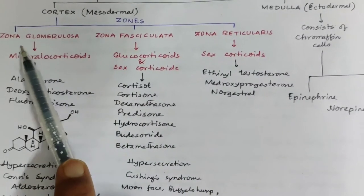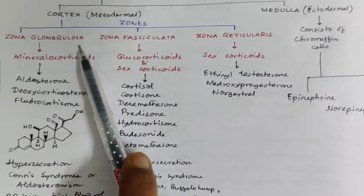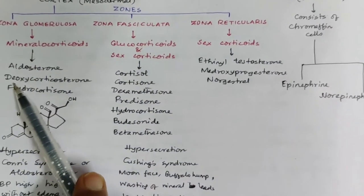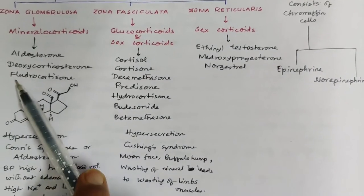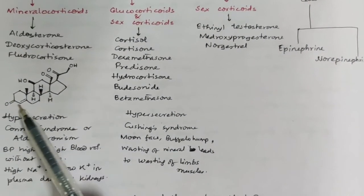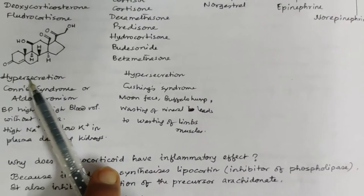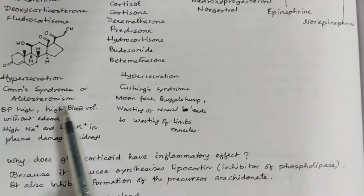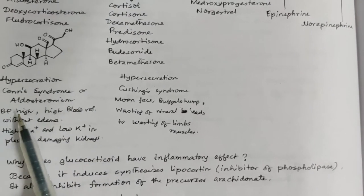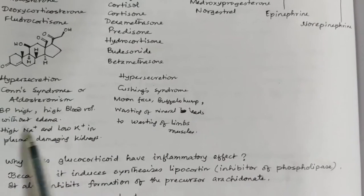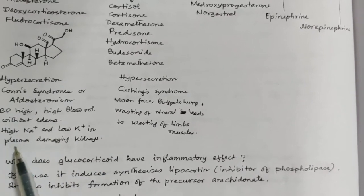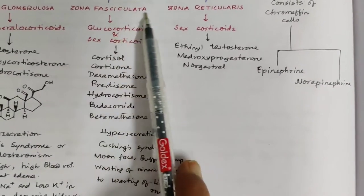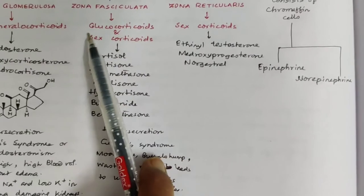The cortex contains three layers. The first layer is zona glomerulosa, which secretes mineralocorticoids like aldosterone, deoxycorticosterone, and fludrocortisone. Hypersecretion of aldosterone causes Conn's syndrome (aldosteronism), with symptoms like high BP, high blood volume without edema, high sodium and low potassium in plasma, and kidney damage.